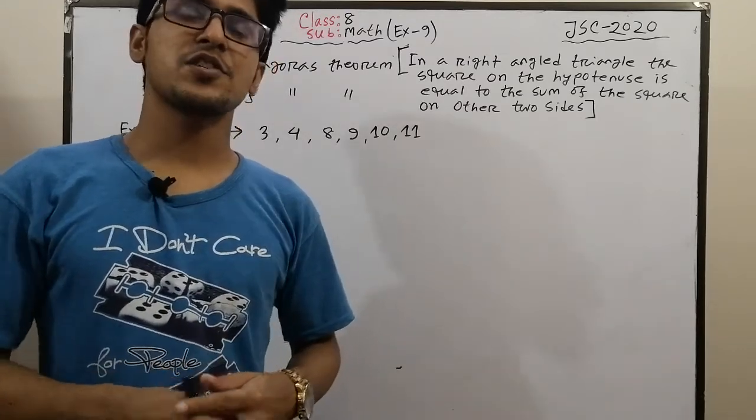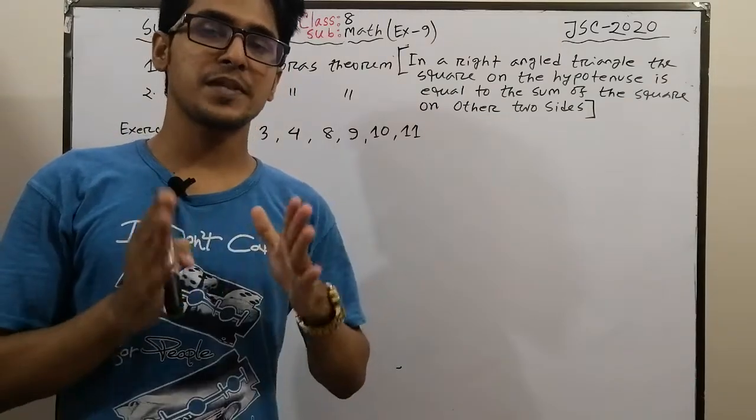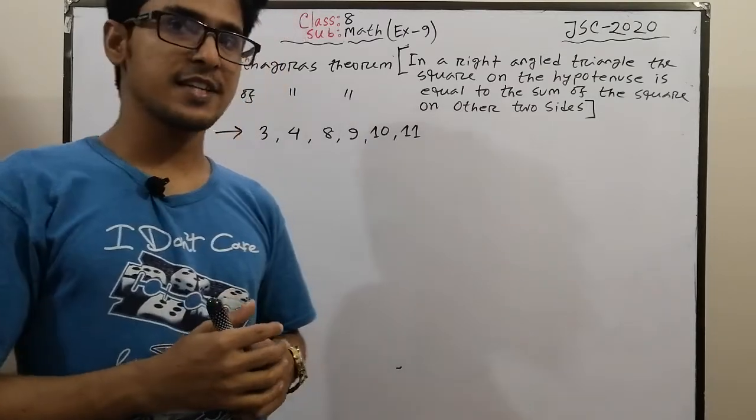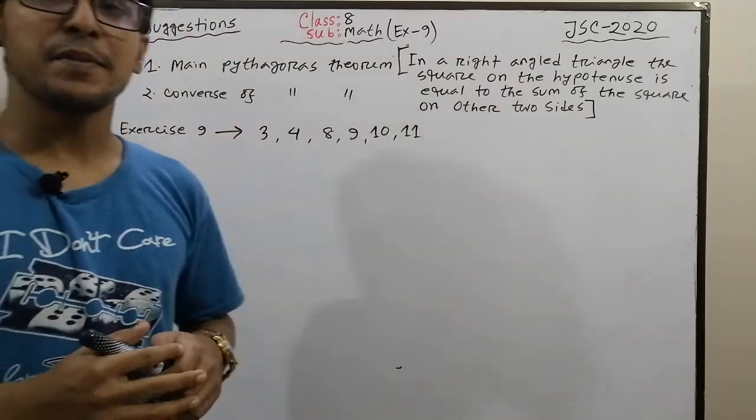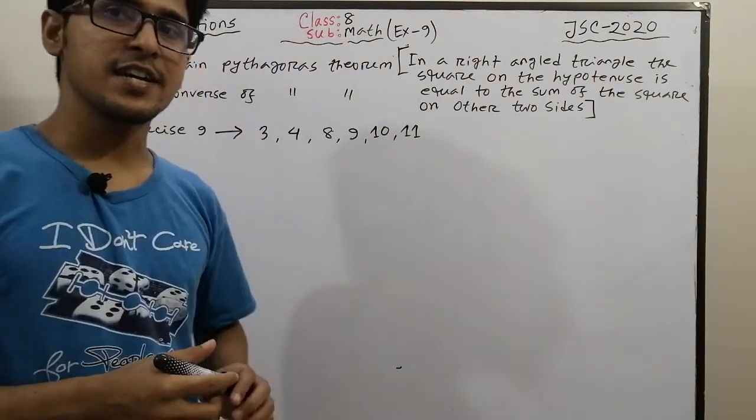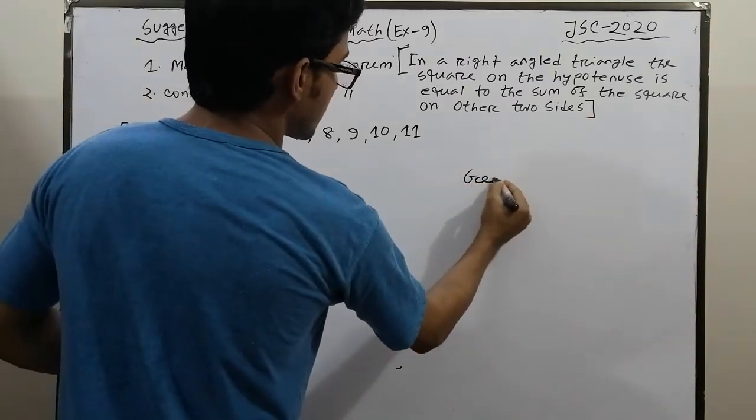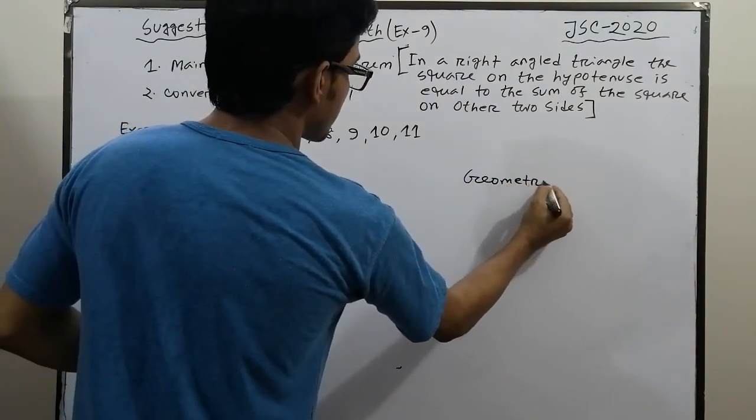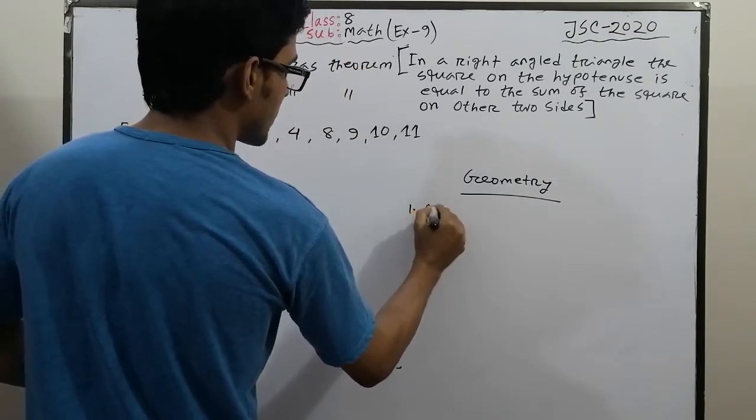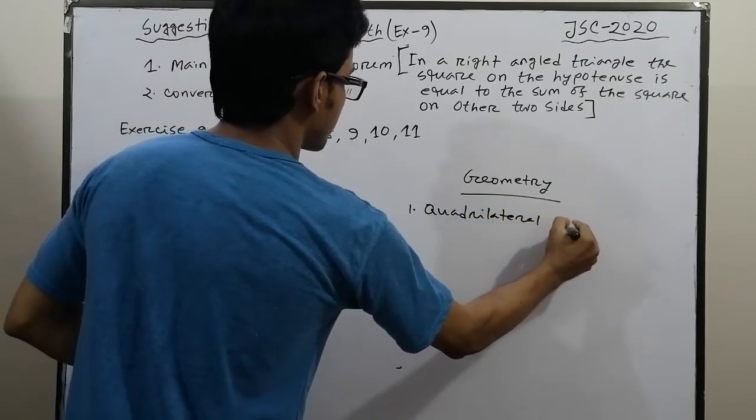We will meet to discuss the Pythagorean theorem. I'm going to discuss it fully. This is the chapter on quadrilateral theorem. It's Chapter 8 about quadrilateral theorem.